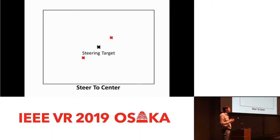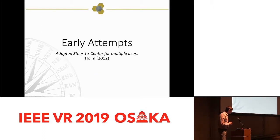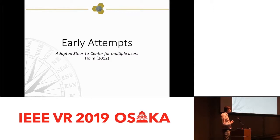A more subtle solution is to give people their own offset center, steering people to slightly different center points in the room. That still does nothing to prevent collisions other than near that center point, and it doesn't scale well — as you add more users, the offset centers get more dispersed and closer to the walls. One of our grad students at Miami, Jeanette Holm, took this modified steer-to-center approach and tried to extend it to work with multiple users.